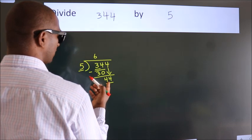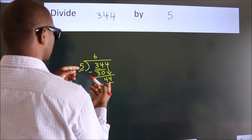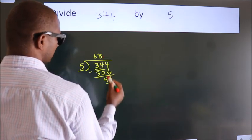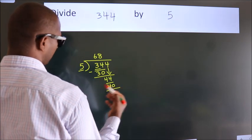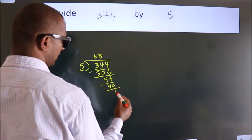A number close to 44 in the 5 table is 5 times 8, 40. Now we subtract. We get 4.